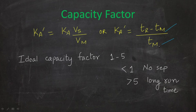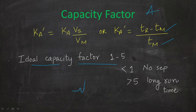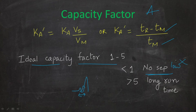For ideal capacity factor separation, if one analyte is too strongly retained, that is actually a waste of resources — mobile phase and everything. So the capacity factor should neither be too low nor too high.